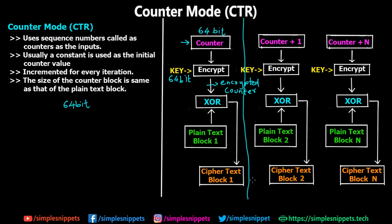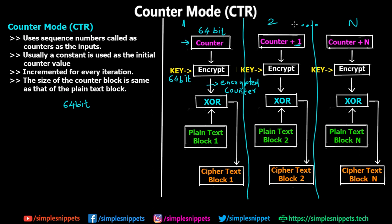This is the first iteration, this is the second iteration, and you have multiple steps up to step N depending on the size of the plaintext. There is no feedback mechanism — unlike Cipher Feedback, Output Feedback, or Cipher Block Chaining where some part from the first iteration was fed into the second. Here, to add randomness, we simply increment the counter by one. We can increment it by two, three, or any fixed number, but the value or sequence must be fixed.